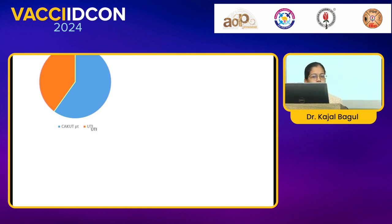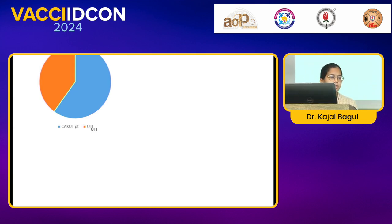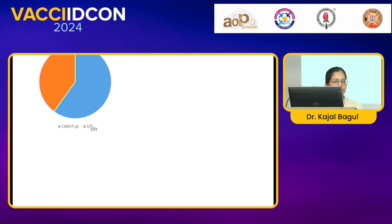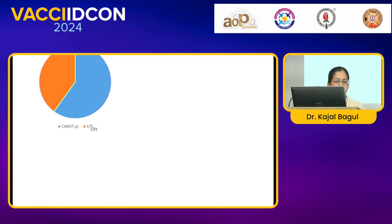Prevalence of UTI in CAKUT patients: in our study, 48 patients were included, out of which 32 patients were found to be UTI positive. This percentage is 68% found to be UTI positive.